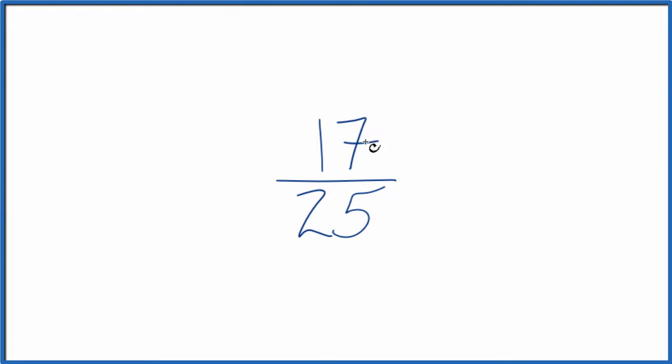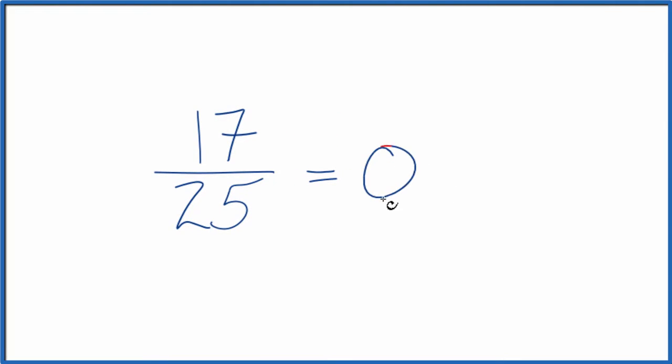First, we can just divide 17 by 25 on our calculator. We get 0.68. So the fraction 17 25ths equals the decimal 0.68.